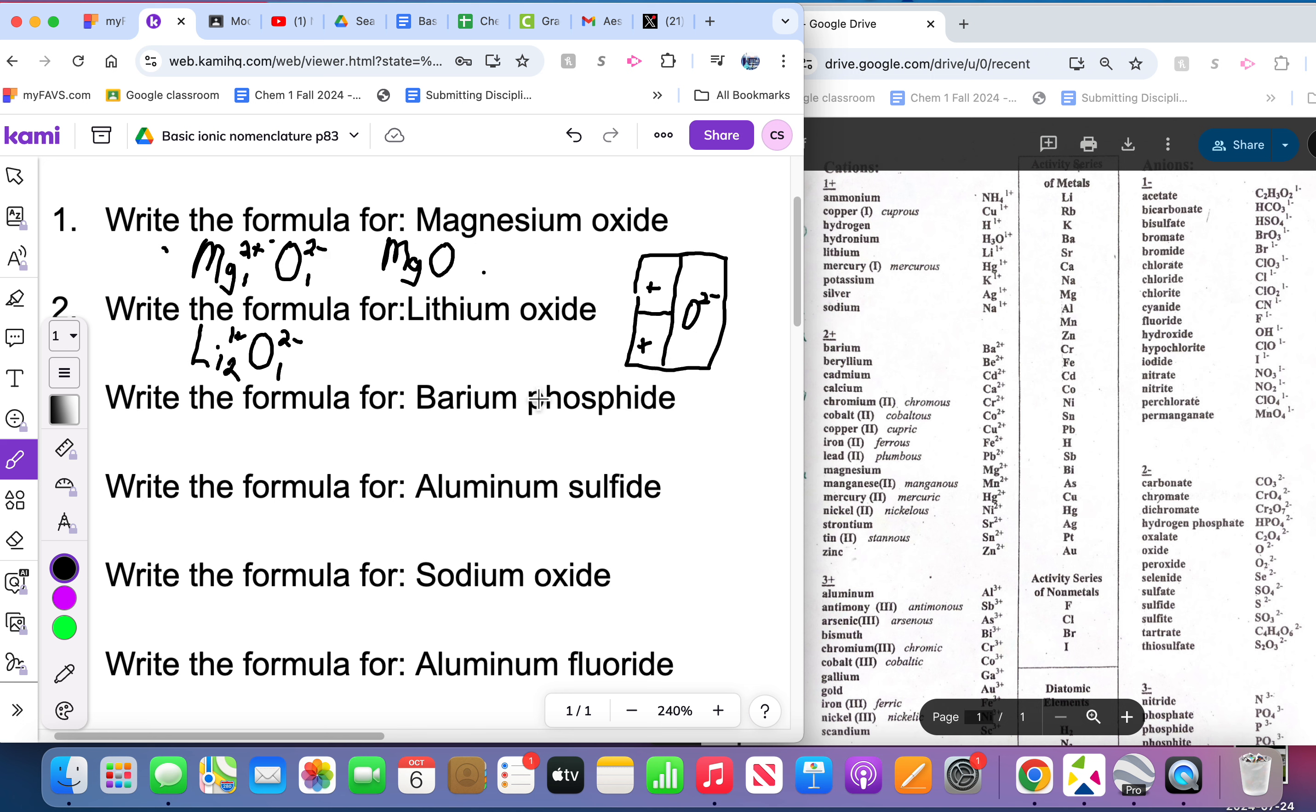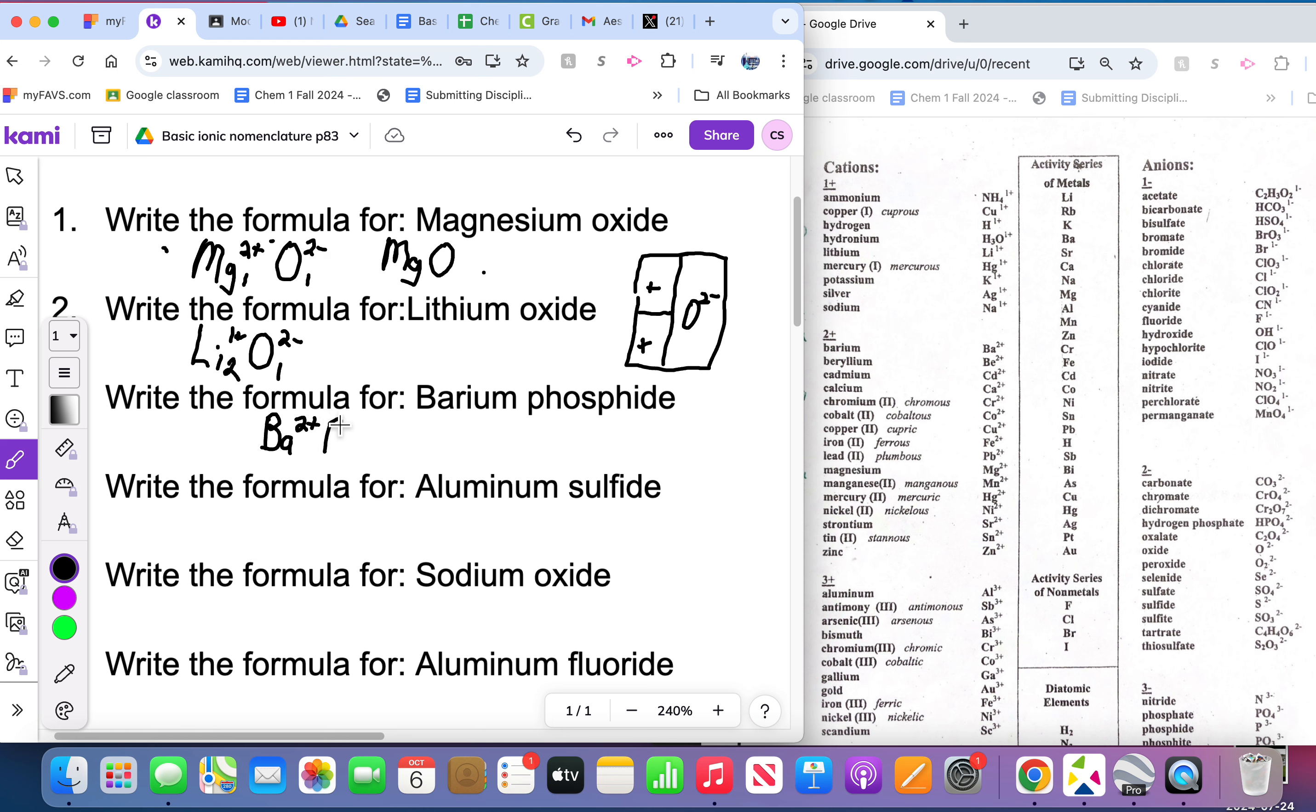That's what you would do to write formulas, you can do the crisscross method. I'll do one more here. Barium phosphide, so you write Ba, you look up barium, it's two positive. Phosphide is P, you can find it, it's in the three negative way at the bottom here.